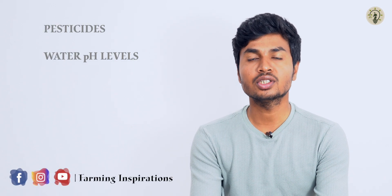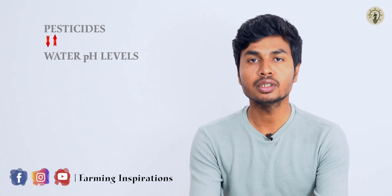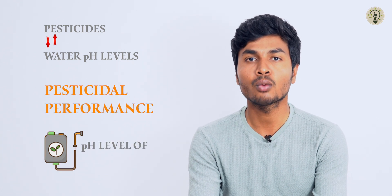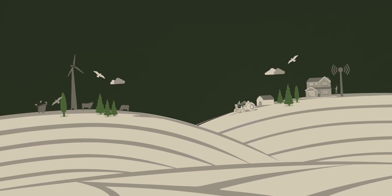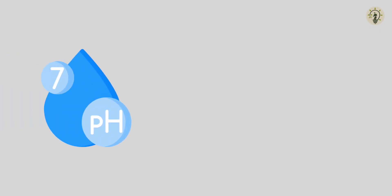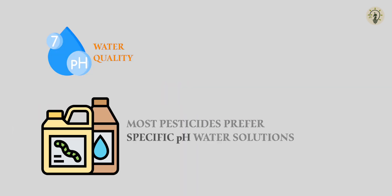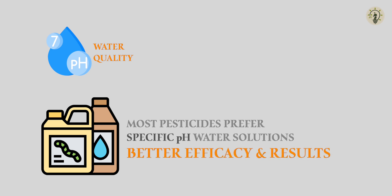Pesticides and water pH levels are interrelated, where the performance of pesticides can be greatly affected by the pH level of water in which it is mixed. Water pH is a major component of water quality and most pesticides prefer specific water solutions of pH for better efficacy and results.